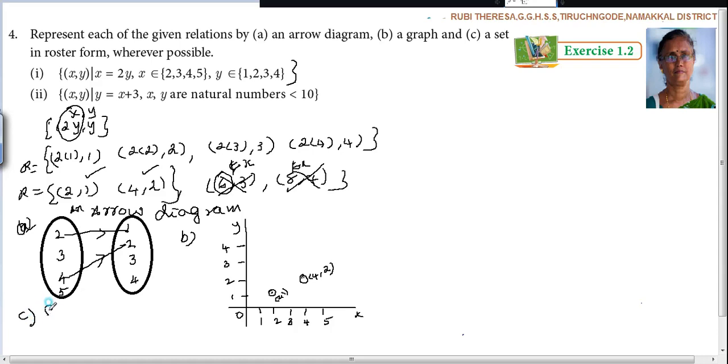Next one is roster form. What is roster form? Elements are written in order pairs because it is given like 2, 1 and 4, 2. So all the 3 subdivisions you have finished. 3 forms: arrow diagram, graph, and roster form. Next one.